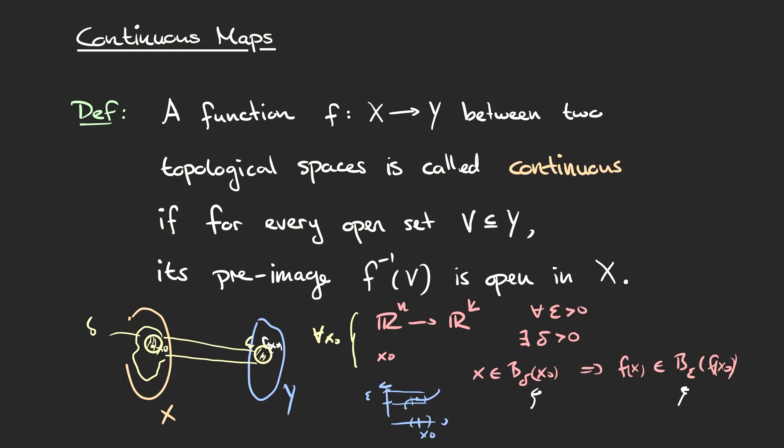Because these two definitions are equivalent for Euclidean space, all the functions you already know to be continuous between Euclidean spaces are still continuous with our new definition. This immediately gives us a ton of examples: every polynomial function is continuous, linear maps between Euclidean spaces are continuous, and functions like exponential functions, the logarithm, the absolute value function, and all trig functions are still continuous in our new sense.